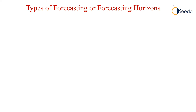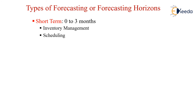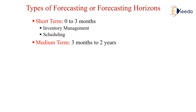So, what are the types of forecasting horizons? Based upon the methods of forecasting, they are generally classified into three types: short term, medium term, and long term. The short term type ranges from 0 to 3 months, where we focus on inventory management and scheduling — we find a method and based upon that, we carry out inventory management and scheduling.